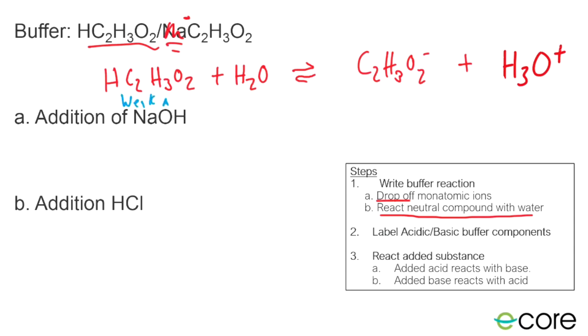And we're going to get C2H3O2- plus H3O+. Over here we see our weak acid, and over here we see our conjugate base. So those are two things we have to add to get a buffer. Now we see our acidic component and our basic component of our buffer.